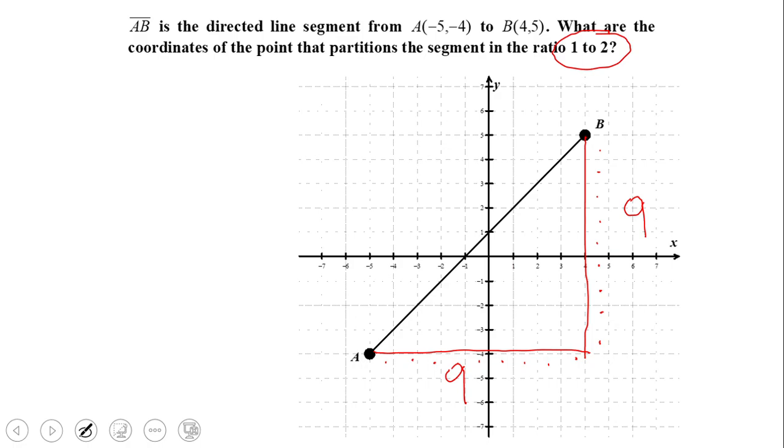The next step, you are going to divide both the horizontal and the vertical by the sum of 1 and 2. So you are going to divide 9 by 3. And that gives you 3. The reason we divide by 3 is because we are trying to partition the segment in 3 congruent segments.